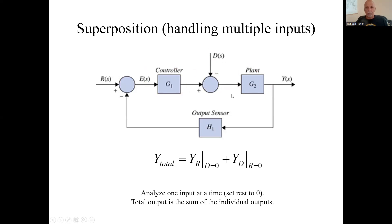Well, the beauty of linear systems is the overall output is the sum of the individual outputs from each input. So if I had a transfer function from this input to the output and a transfer function from this disturbance input to the output, the total output is the sum of those two.